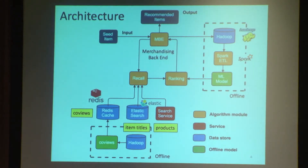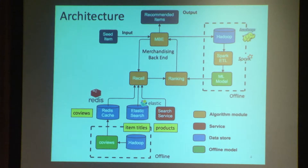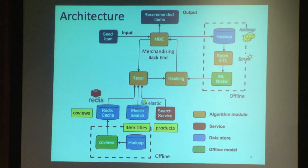One recall source is title similarity — matching the seed item title to potential recommendation items using a home-built Elasticsearch cluster, which returns item titles very fast. A third recall source is based on co-views: a behavioral model where a user views item A and B, and another user might like item B as well. We have an offline job processing data in Hadoop and storing it in a Redis cache for fast runtime access. Most recently, we've added an image similarity module using deep learning. Then we go to the ranking stage, using machine-learned rankings with implicit user feedback in terms of clicks and purchases, stored in Hadoop, processed with Spark, with an offline model whose parameters are passed to the real-time platform.